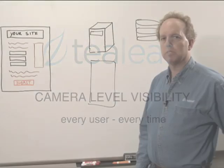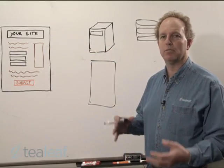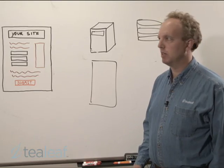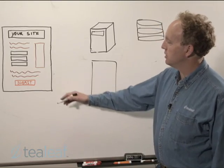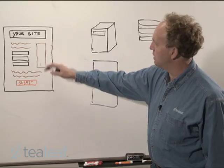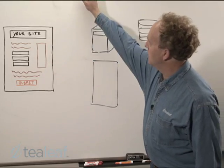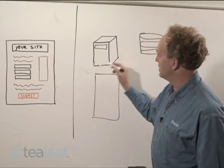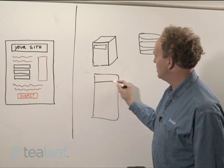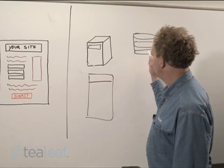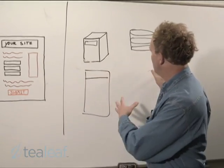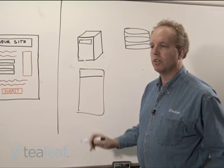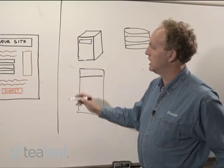Now I'd like to explain what it means to have camera-level visibility to each and every user on your website. In our example here, we see a user operating in a browser and they're going to come across the internet and talk to your site. Your site may have many web servers, app servers, and a very complex tier that results in the user interacting with your site.